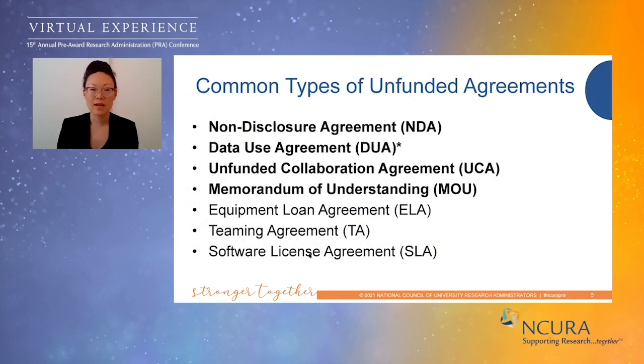We highlight the most common types of unfunded agreements here, but we are seeing growth in some of these other areas — specifically software license agreements. As universities push for better understanding of where their technology is going, we're seeing more software license agreements from collaborators. Previously, software might be shared among collaborators without any formal agreement; now we're seeing institutions that loan software to collaborators wanting something formal in place. Also, you might be wondering why there's an asterisk next to DUA — it's because the title of an agreement may not necessarily reflect what the agreement is actually about and requires a bit more analysis.